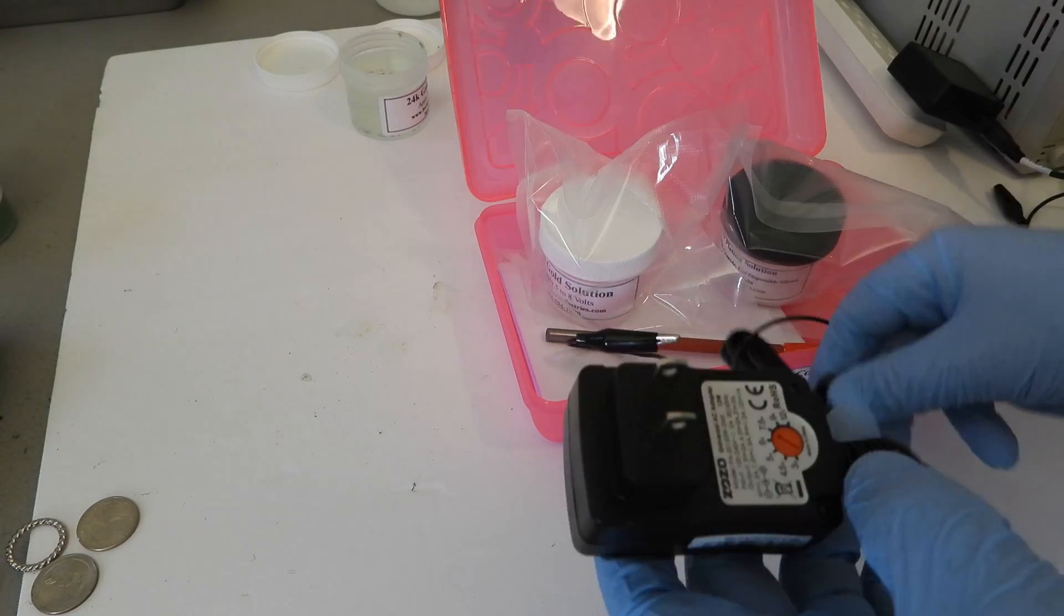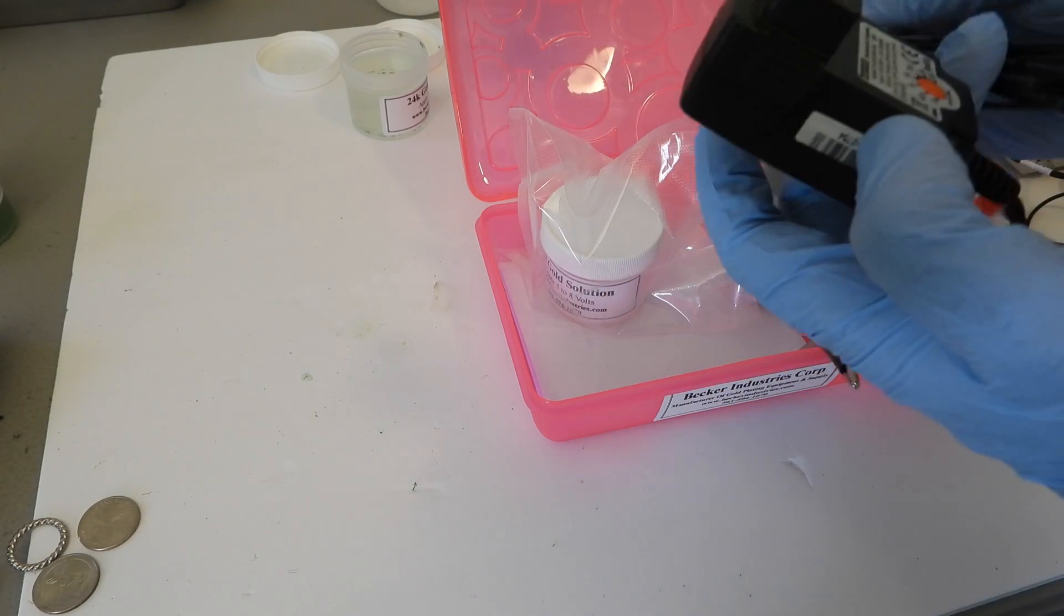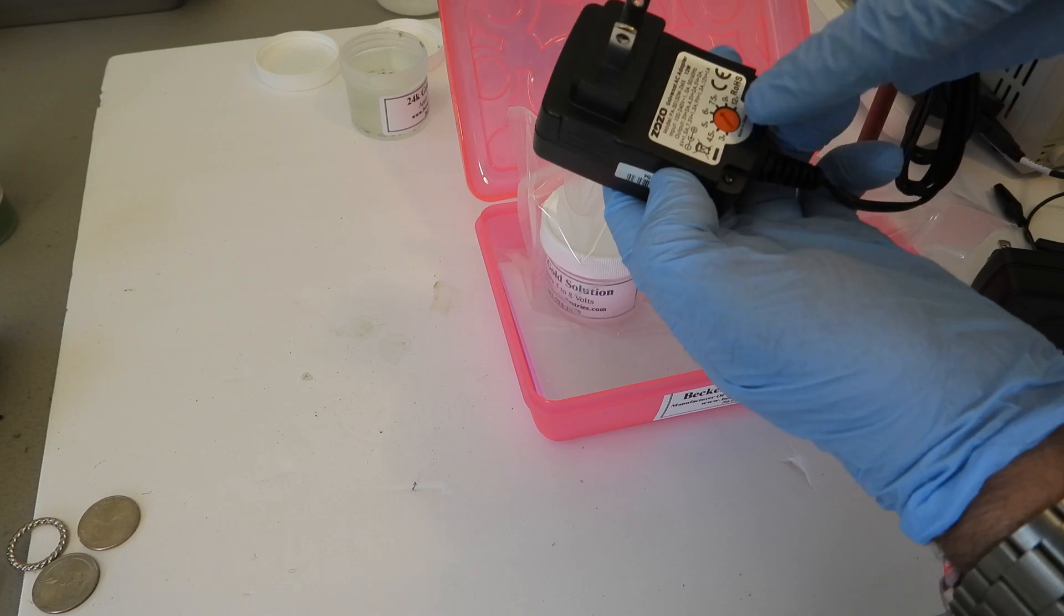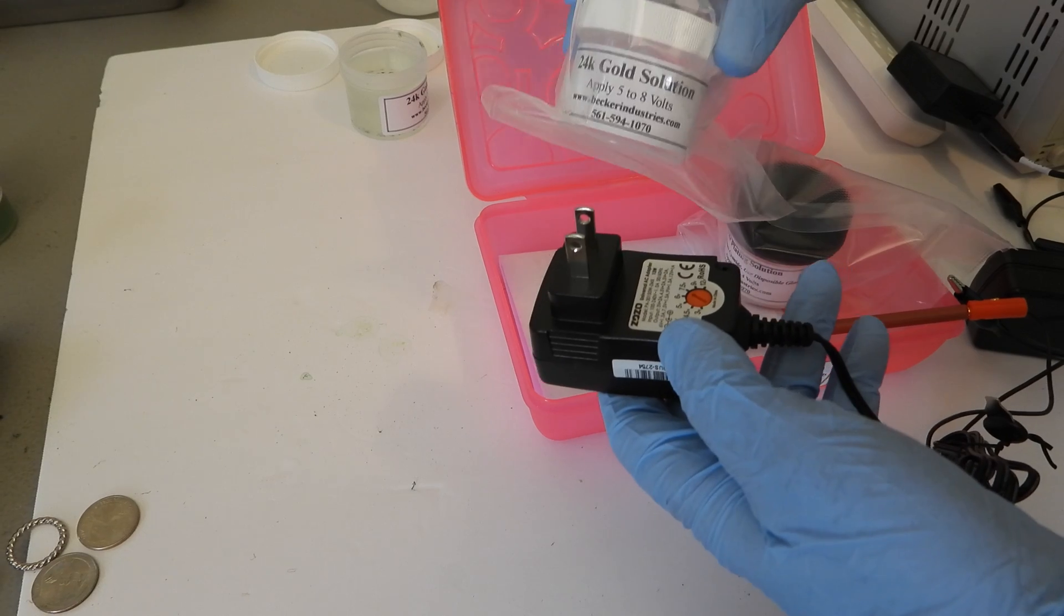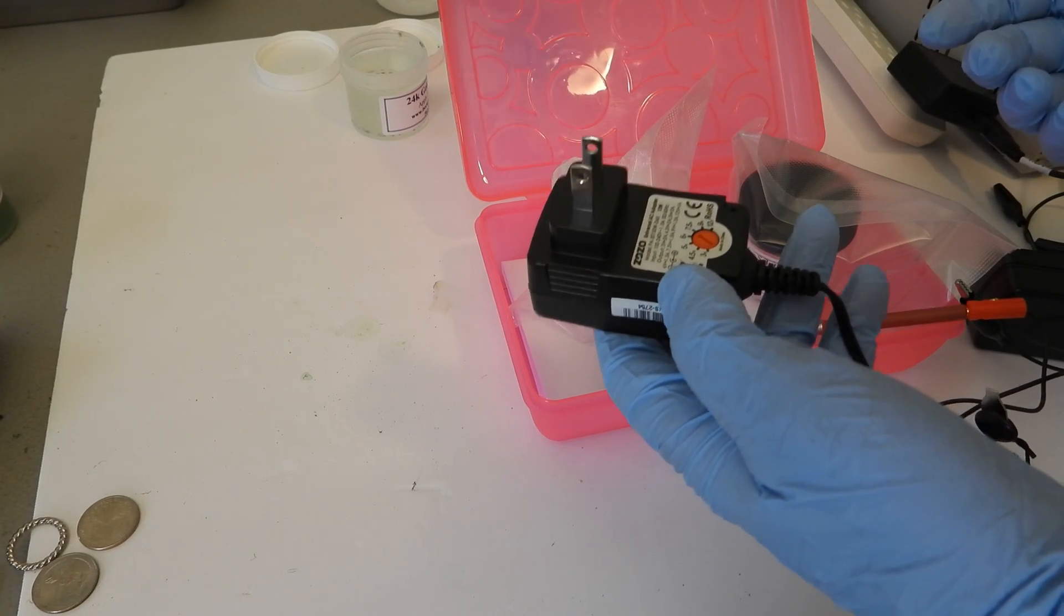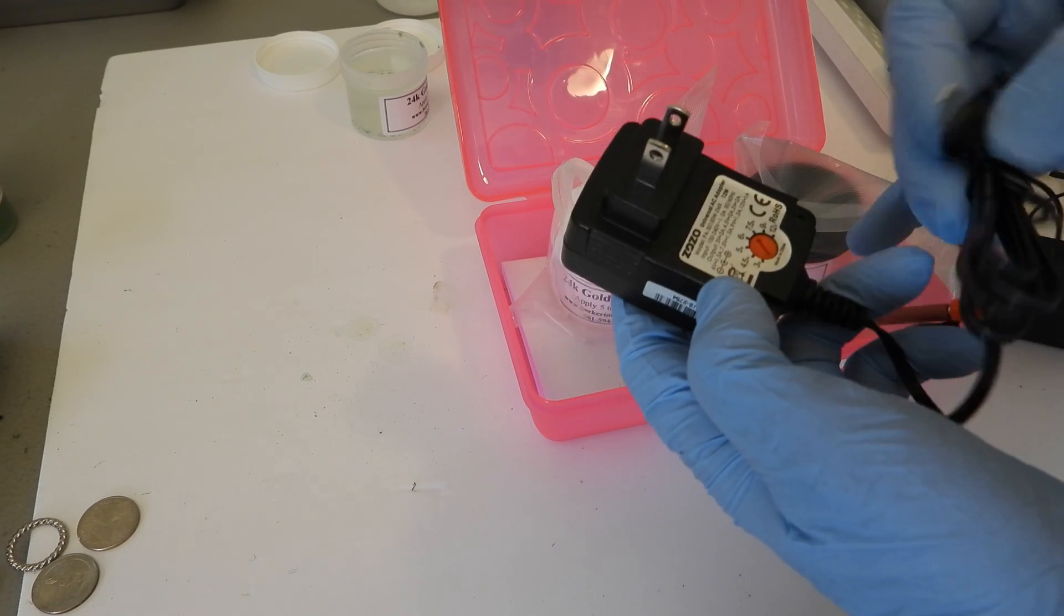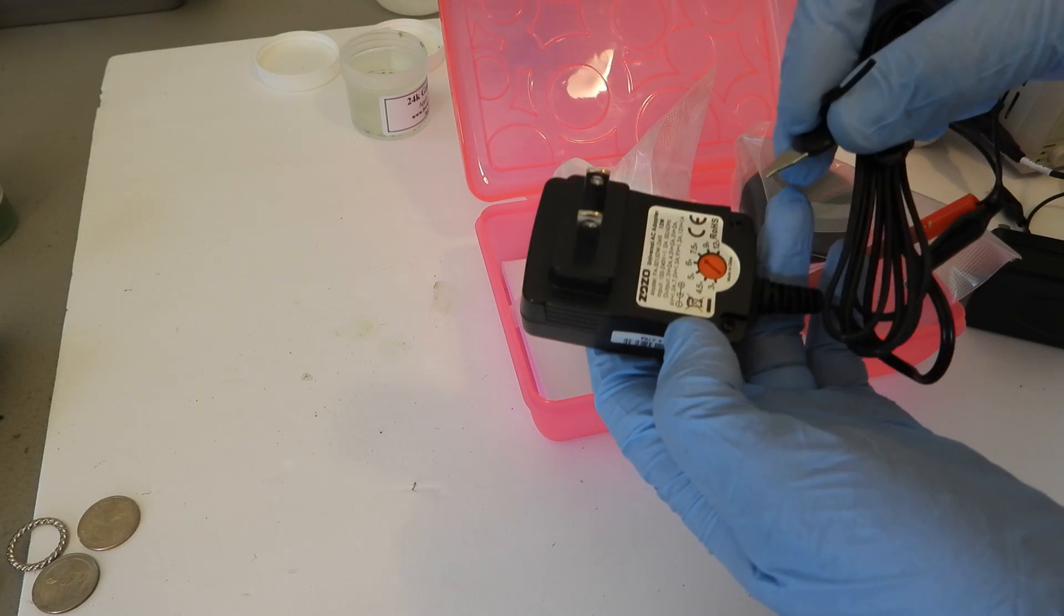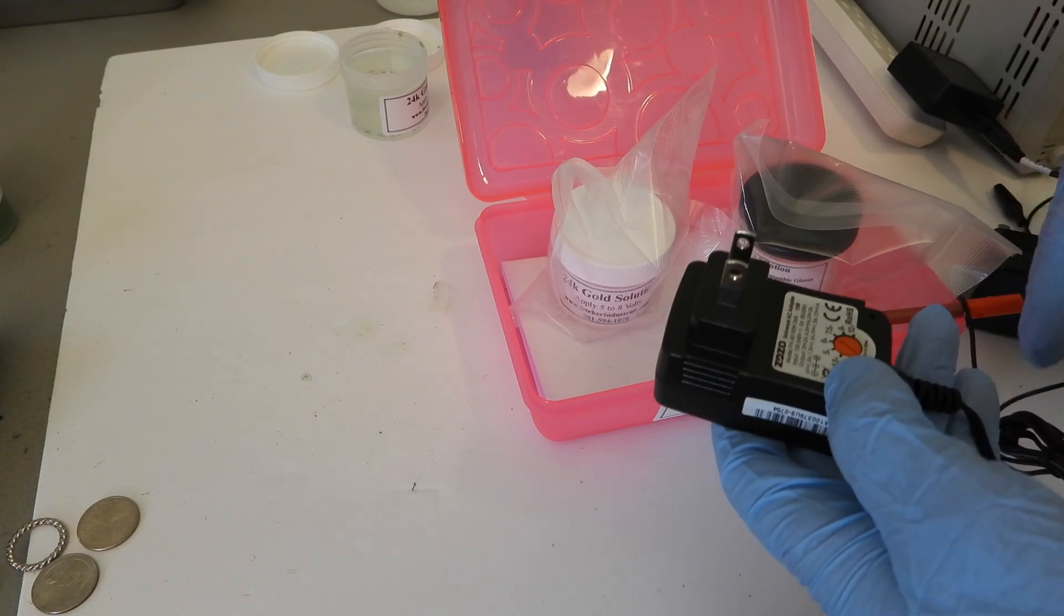You can adjust the voltage from between 3 volts to 12 volts. For example, let's say the gold solution, our gold solution uses between 4 to 8 volts. If you want to plate, you can set it anywhere from four and a half to seven and a half volts or even nine volts, it will work.